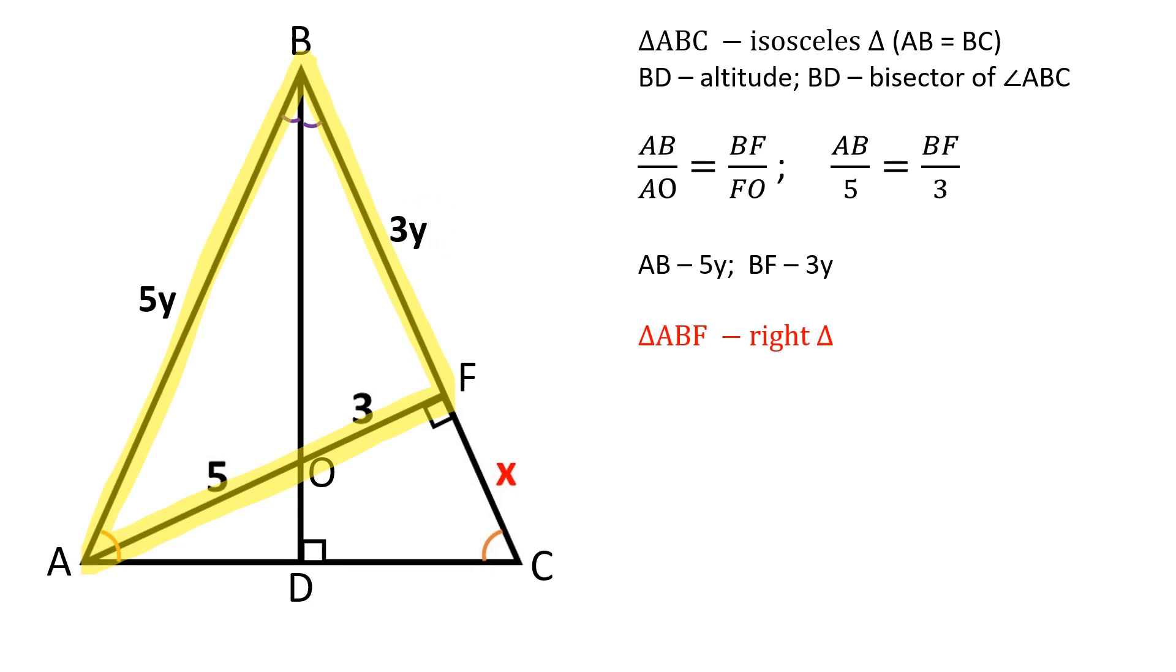Triangle ABF is a right triangle. By the Pythagorean theorem, AB squared is equal to AF squared plus BF squared. Let's substitute in the values and after solving the equation, we are left with y is equal to 2.